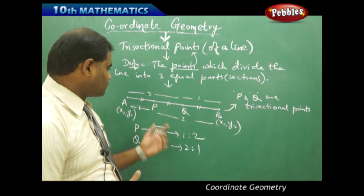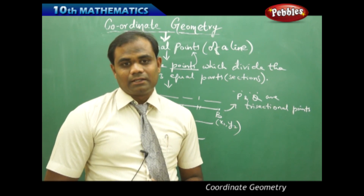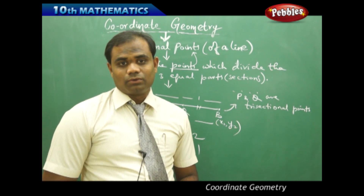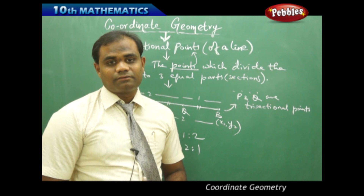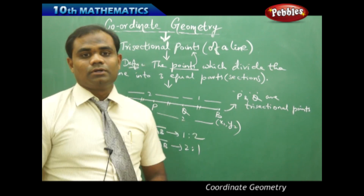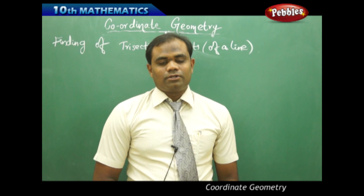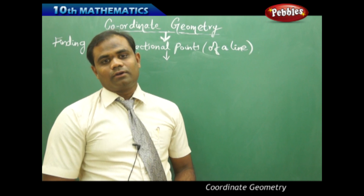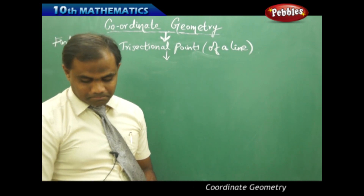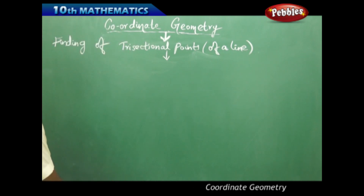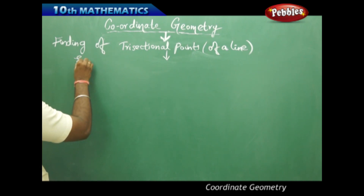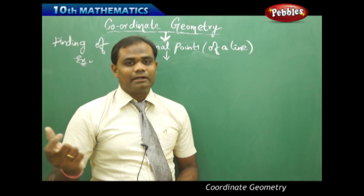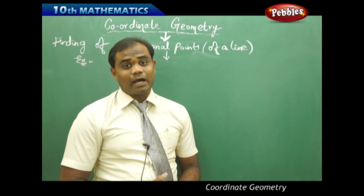Let's see how we can find the coordinates of P and Q using the coordinates of A and B and the ratio. The task is about identifying the coordinates of P and Q, the points of trisection. Let's find the trisectional points of a line. I'll take an example problem and directly find the points of trisection, as deriving a separate formula is not necessary here.